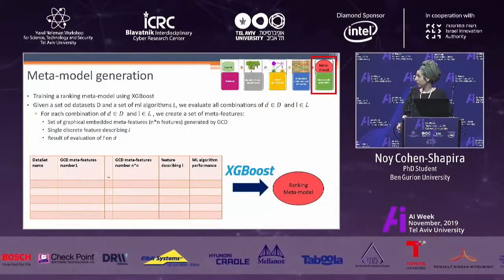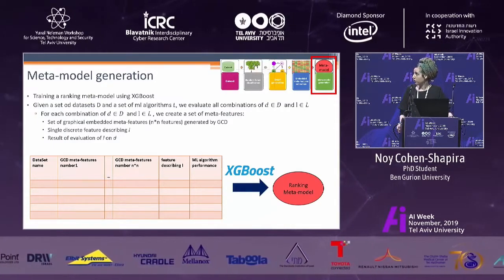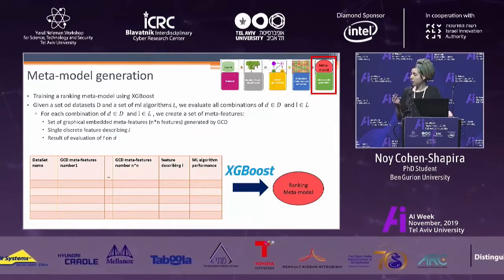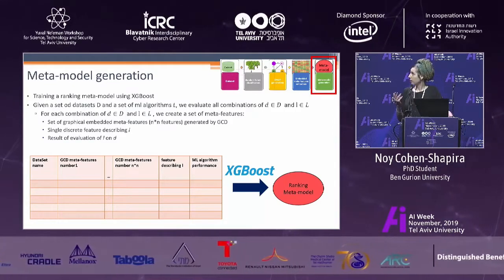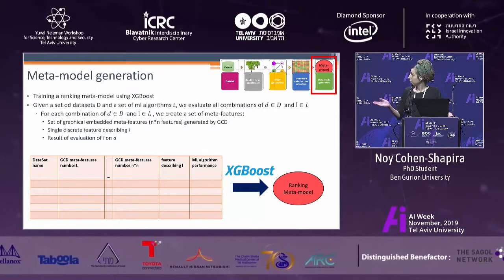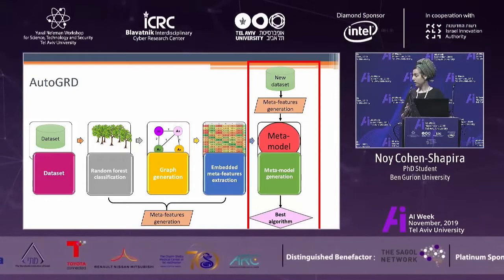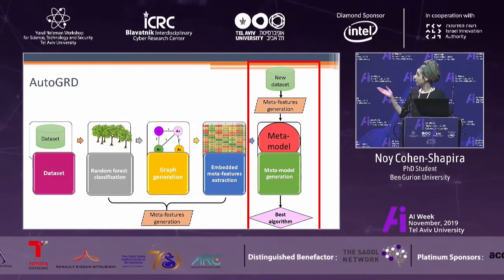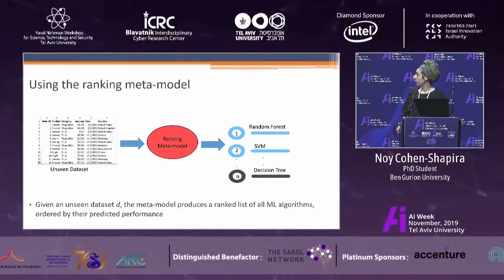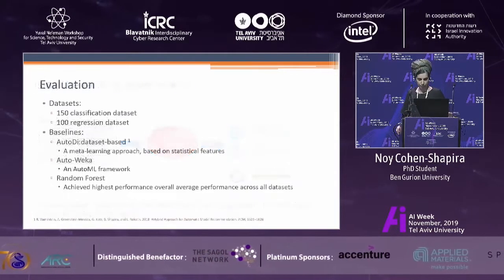We train a ranking classifier where each instance in the training set includes the dataset name, features obtained from the GCD algorithm, features describing the machine learning algorithm, and the performance of that algorithm on the dataset. When training is finished, we obtain a ranking meta-model. When a new dataset arrives, we run the meta-features generation steps, and the meta-model produces a ranked list of machine learning algorithms ordered by their predicted performance.